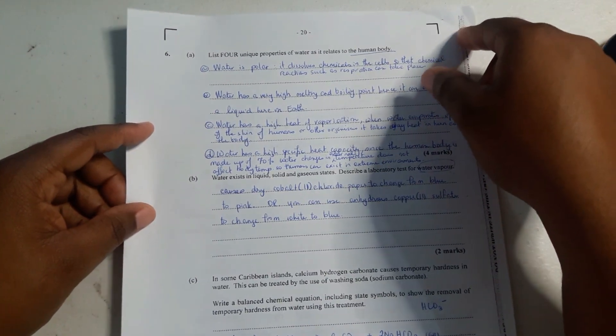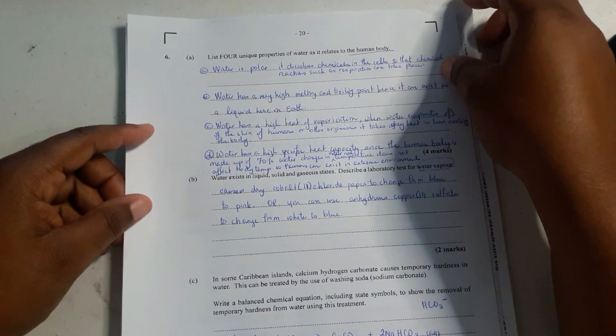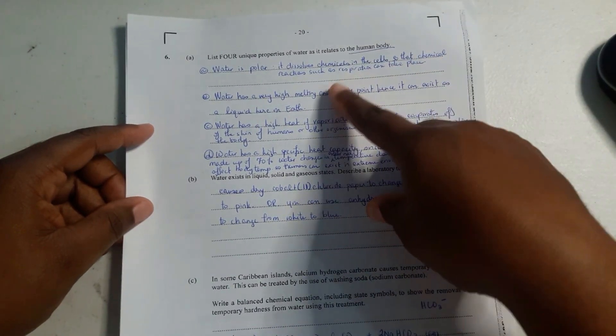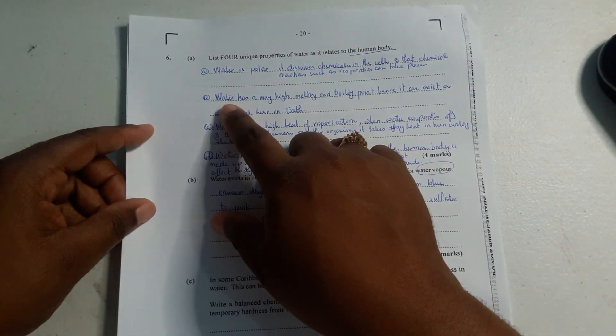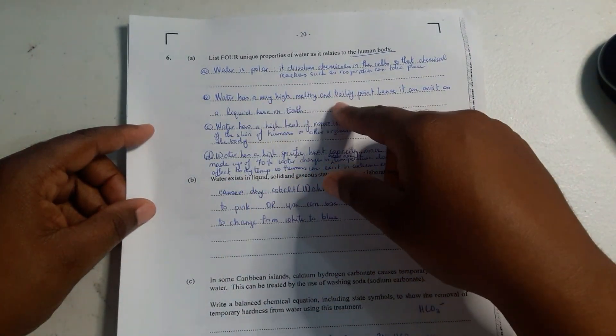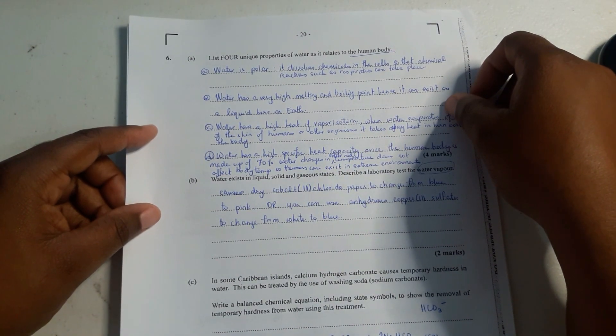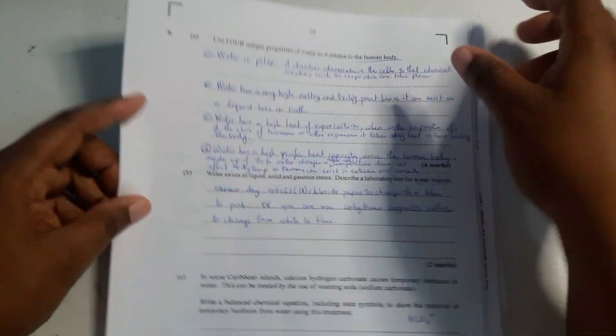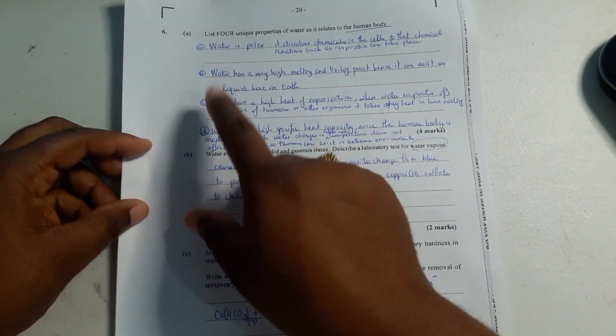I gave four. They said: (a) Water is polar, it dissolves chemicals in the cells so that chemical reactions such as respiration can take place. (b) Water has a very high melting and boiling point, hence it can exist as a liquid here on earth, which is essential for our everyday life and survival.